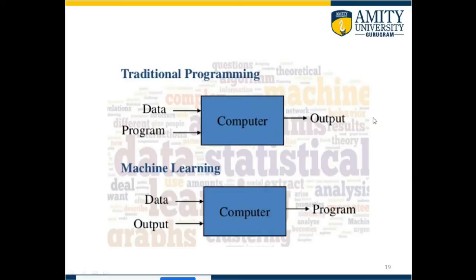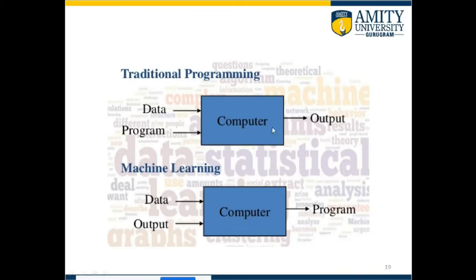If you have done a little bit of programming using C, C++, or any other programming language, you can see the traditional programming model: you have data, you write a program, you supply it to the computer, and you get an output. Now see what happens in machine learning. In machine learning, you supply the data and the output — the data is a labeled example, the output is the label. The computer tries to learn from this given data and output. What you get is a program — a model — that you can use later for prediction purposes.